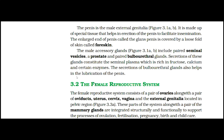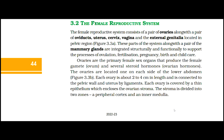3.2 The Female Reproductive System. The female reproductive system consists of a pair of ovaries along with a pair of oviducts, uterus, cervix, vagina, and the external genitalia located in the pelvic region, as given in figure 3.3a. These parts, along with a pair of mammary glands, are integrated structurally and functionally to support the processes of ovulation, fertilization, pregnancy, birth, and childcare. Ovaries are the primary female sex organs that produce the female gamete, which is ovum, and several steroid hormones known as ovarian hormones. The ovaries are located one on each side of the lower abdomen, as given in figure 3.3b. Each ovary is about 2–4 cm in length and is connected to the pelvic wall and uterus by ligaments. Each ovary is covered by a thin epithelium which encloses the ovarian stroma, which is divided into two zones: a peripheral cortex and an inner medulla.